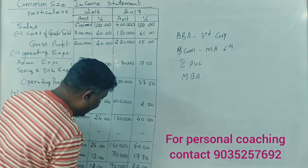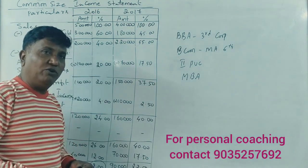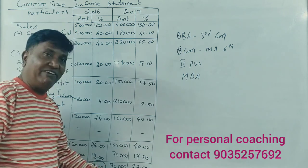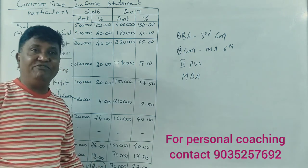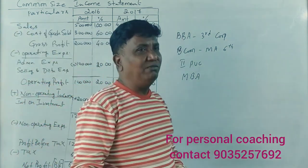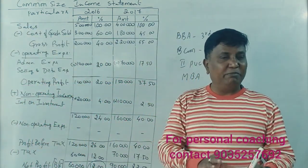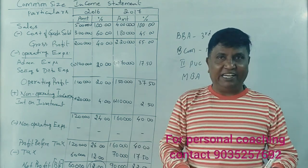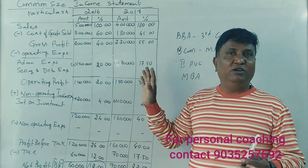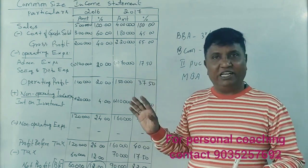Now this gives us an idea that in 2016 the net profit was 12% of sales, whereas in 2017 it is 22.5% of sales. This is a significant point of analysis. If you know how to interpret and analyze this, just use the Common Size Income Statement. This topic carries six marks as one question.